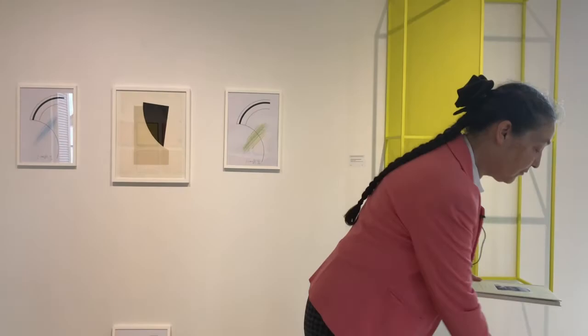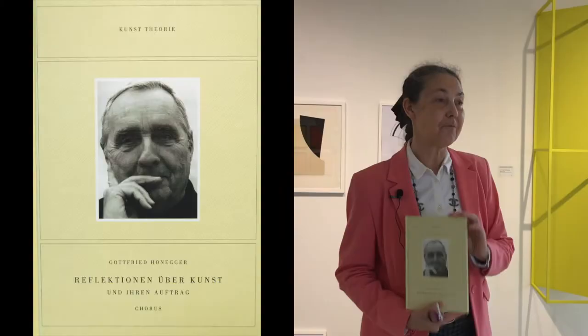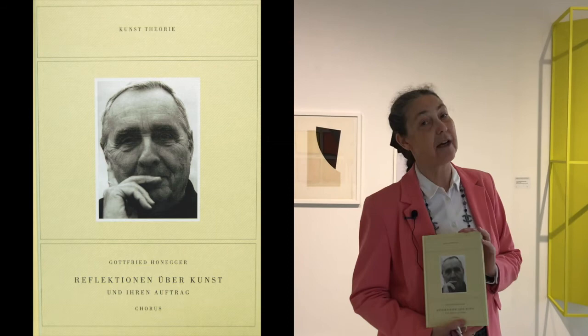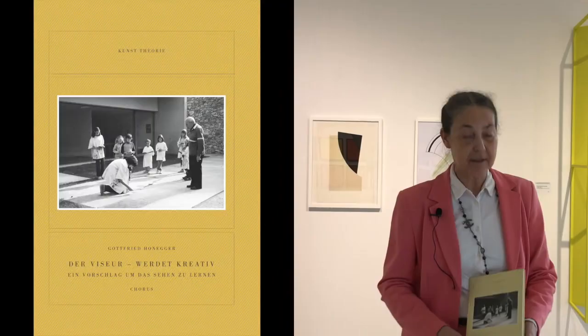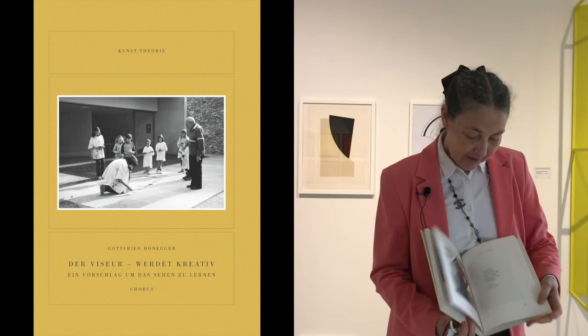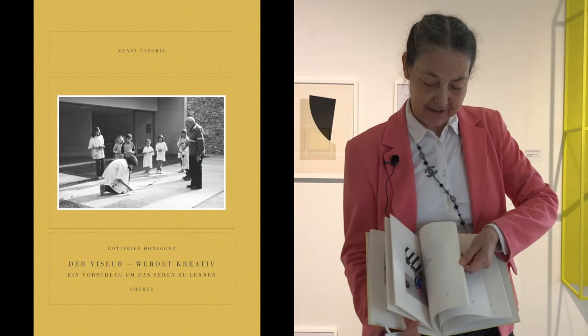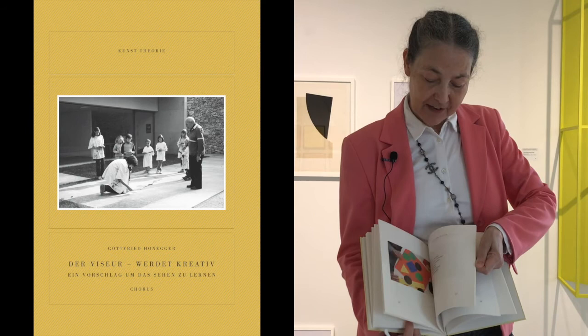Zuletzt – das war schon im Alter von 98 Jahren, also ein paar Monate vor seinem Tod – haben wir das Buch 'Der Viseur' herausgebracht. Da hat er ein Spiel erfunden, das aus einzelnen Elementen besteht, natürlich wieder aus Dreiecken, Kreisen, Quadraten. Und er hat Kinder eingeladen, damit Werke zu schaffen, und da sind ganz schöne Dinge dabei herausgekommen.